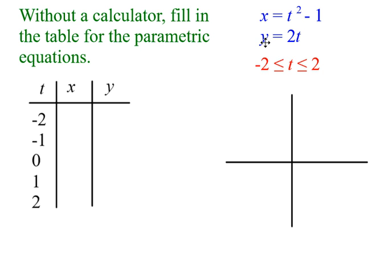Here we have a different parametric equation. Again, it has both x and y as functions of a third variable, which in this case is t, often representing time. And as before, we are going to restrict our times from negative 2 to 2.